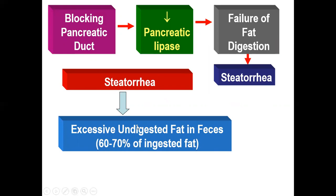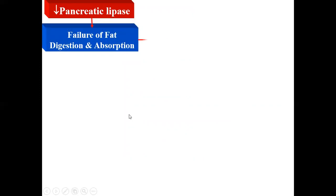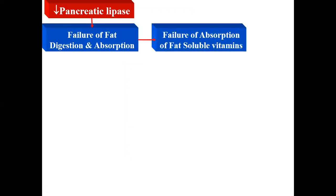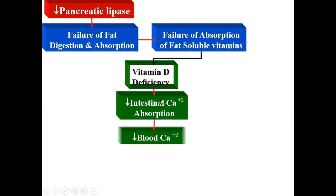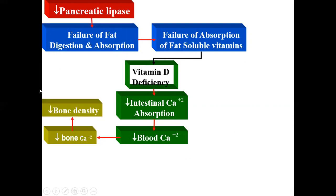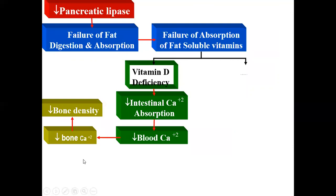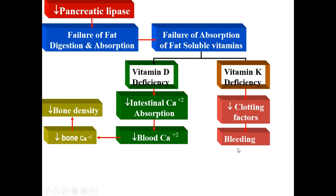Decreased pancreatic lipase leads to failure of fat digestion and absorption, and failure in absorption of fat-soluble vitamins. Vitamin D deficiency leads to decreased intestinal calcium absorption and decreased blood calcium, which decreases calcium in bone and reduces bone density. Vitamin K deficiency leads to decreased clotting factors, resulting in a bleeding tendency.